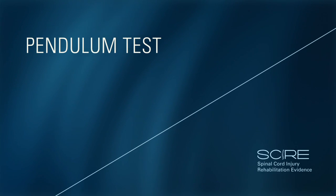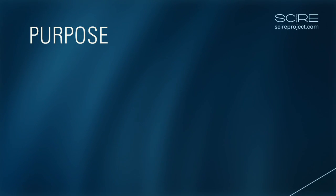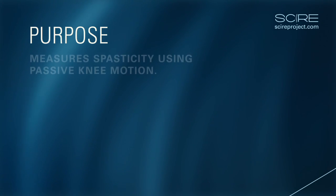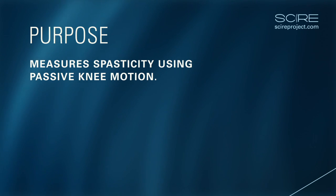Pendulum test. Purpose: The pendulum test is a biomechanical method of evaluating muscle tone. This test is commonly used to measure spasticity of the quadriceps femoris muscle using gravity to provoke muscle stretch reflexes during passive swinging of the lower limb.